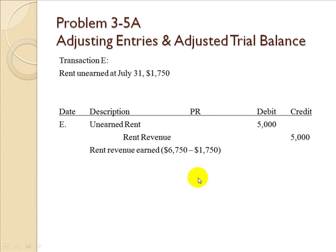Think of unearned revenue in the context of a lawyer. A client comes to a lawyer and asks for assistance; the lawyer requests a retainer fee. That retainer fee is a liability to the lawyer until the work is actually earned, held in an unearned revenue account — also known as an escrow account. As the lawyer does work, they transfer money from the unearned revenue account to the actual revenue account. In the meantime, unearned revenue is considered a liability.